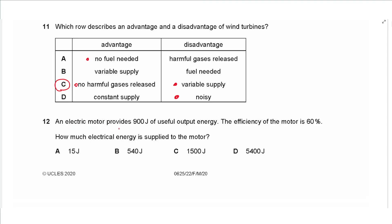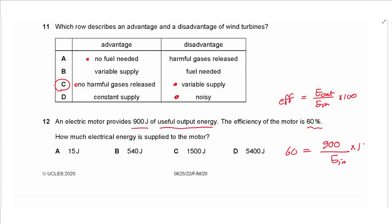Question 12: An electric motor provides 900 joules of useful output energy with an efficiency of 60%. Using efficiency = (energy output ÷ energy input) × 100, we get 60 = (900 ÷ energy input) × 100. Cross-multiplying: energy input = 900 × 100 ÷ 60 = 1500 joules. Answer is C.